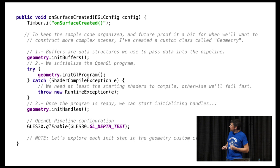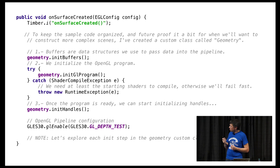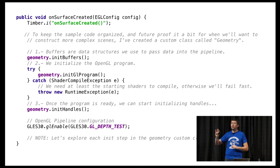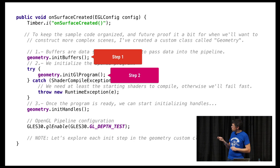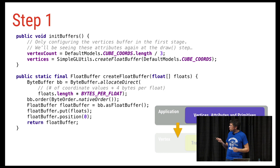Setting up the GL pipeline: the first step we quickly glossed over in the renderer. OnSurfaceCreated is called with an EGL config. It might be called more than once during the lifetime of your program, so you have to be ready to think about reinitializing everything. The steps are: init buffers, then init GL program — configuring those yellow programmable stages — and then initialize handles. Let's look at each of those steps and break down what they actually do.